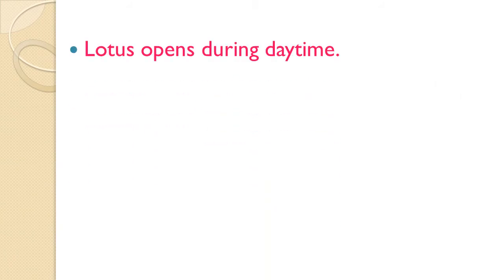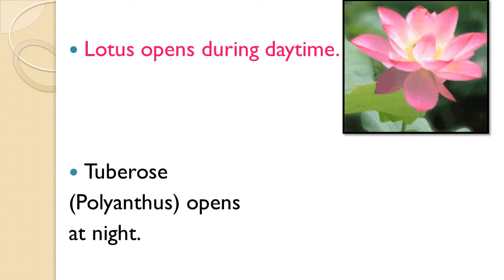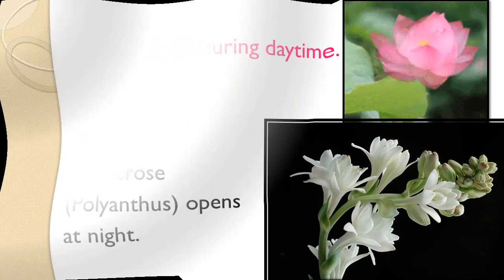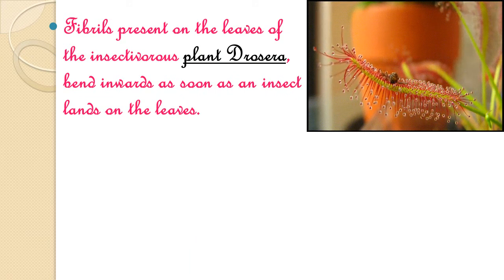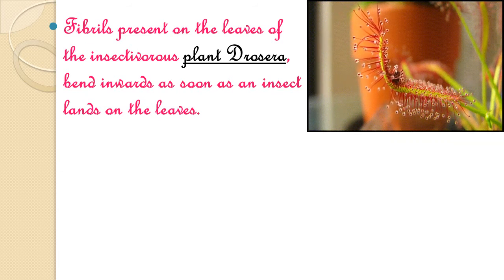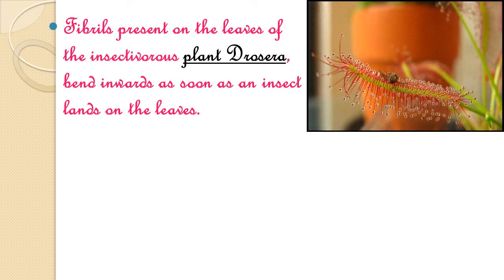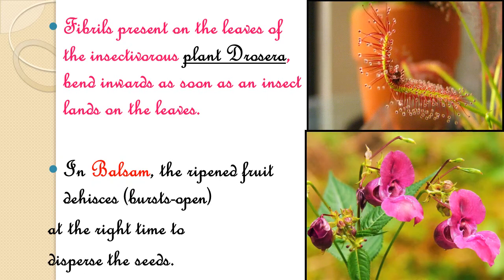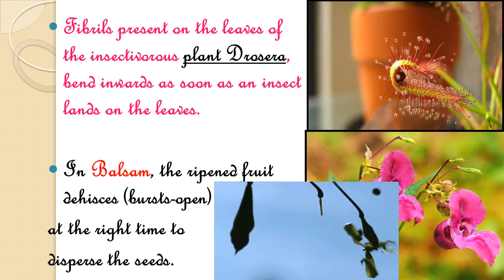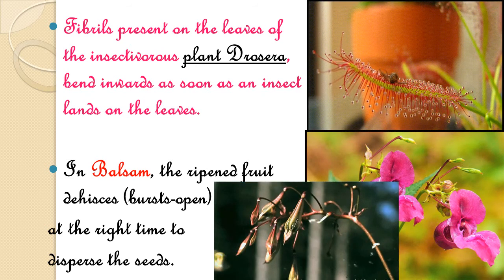The lotus flower opens during the daytime, while tuberose or polyanthus opens at night. The fibrils present on the leaves of the insectivorous plant Drosera bend inward as soon as an insect lands on the leaves, surrounding the insect from all sides. In plants like balsam, the ripened fruit dehisces or bursts open at the right time to disperse the seeds and allow the plant to grow.